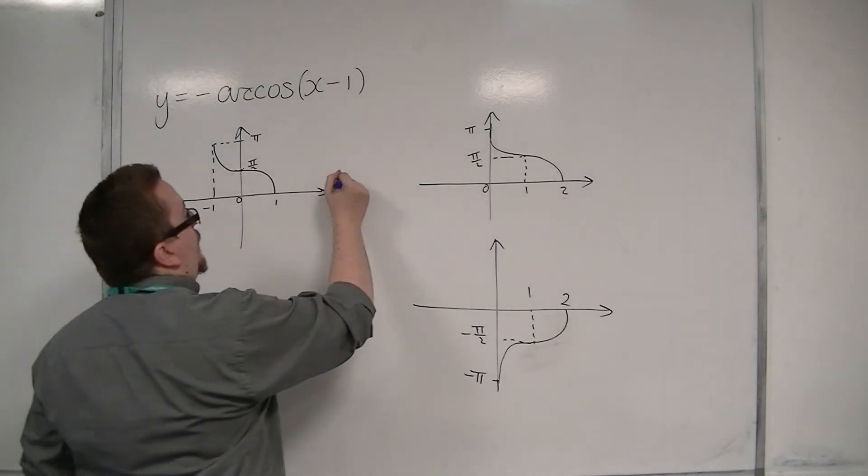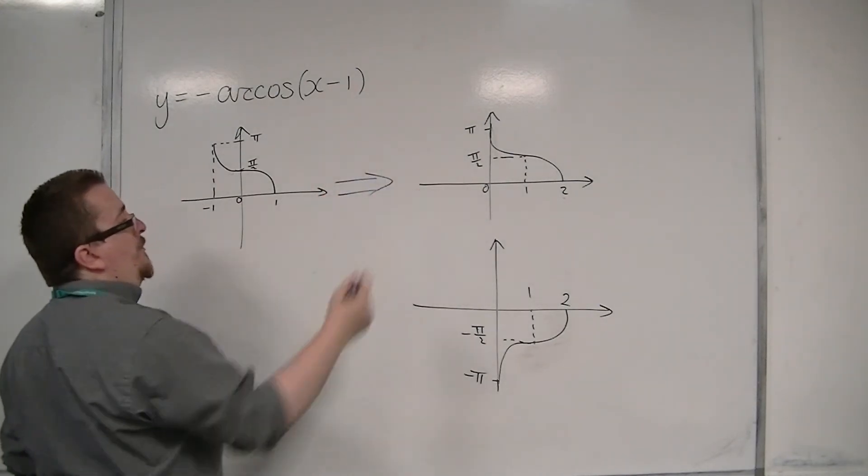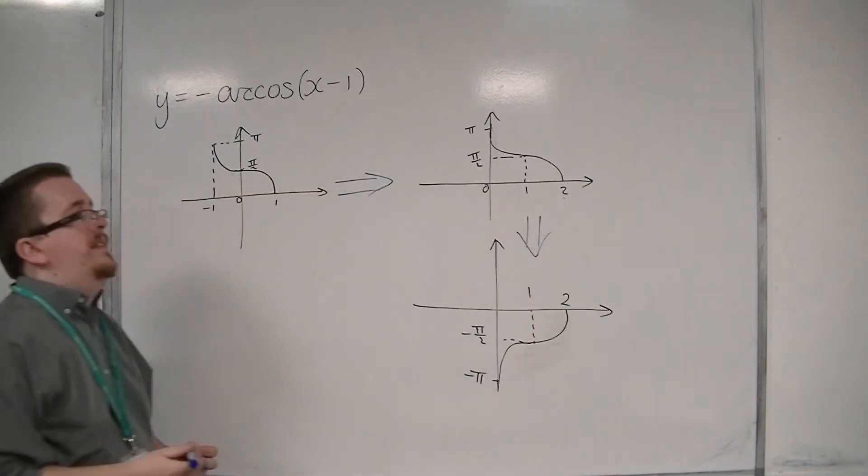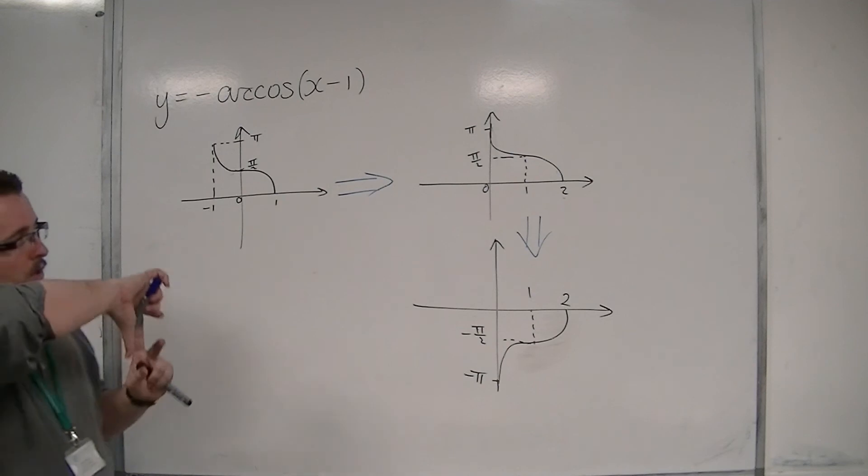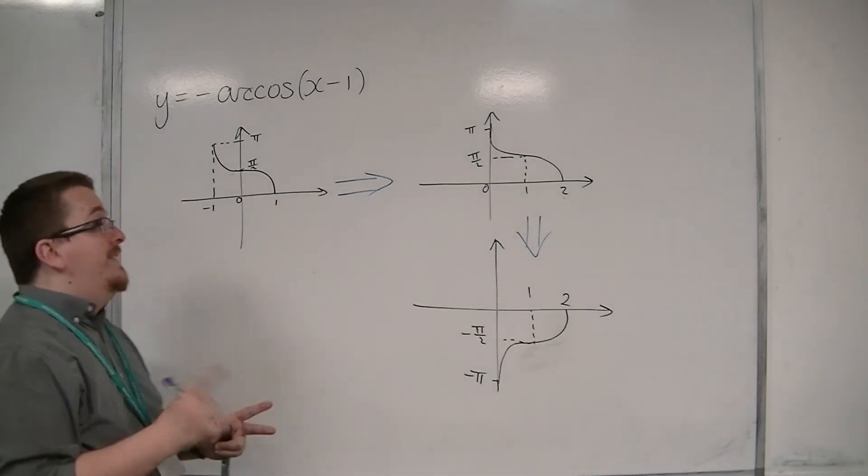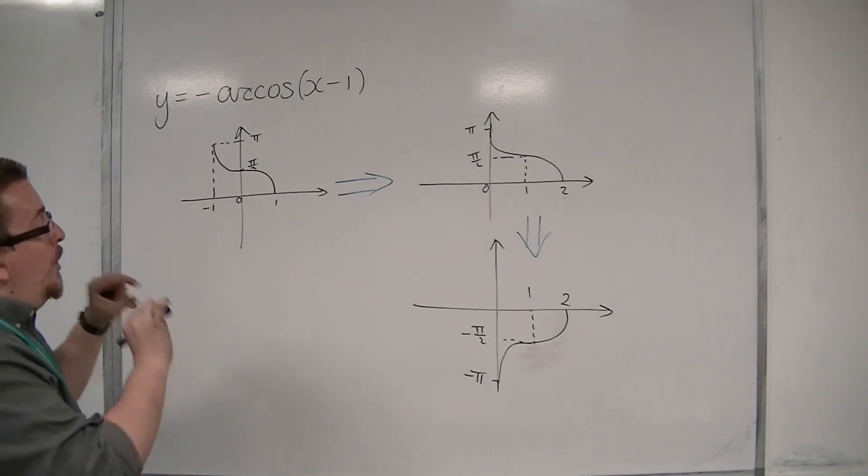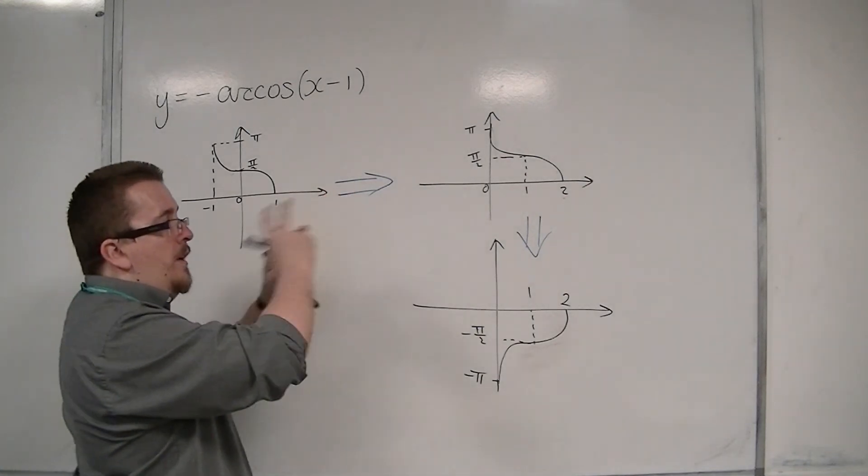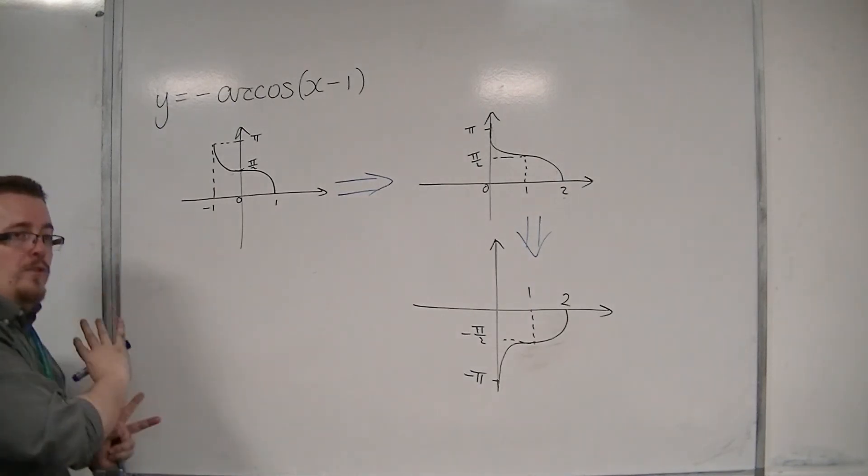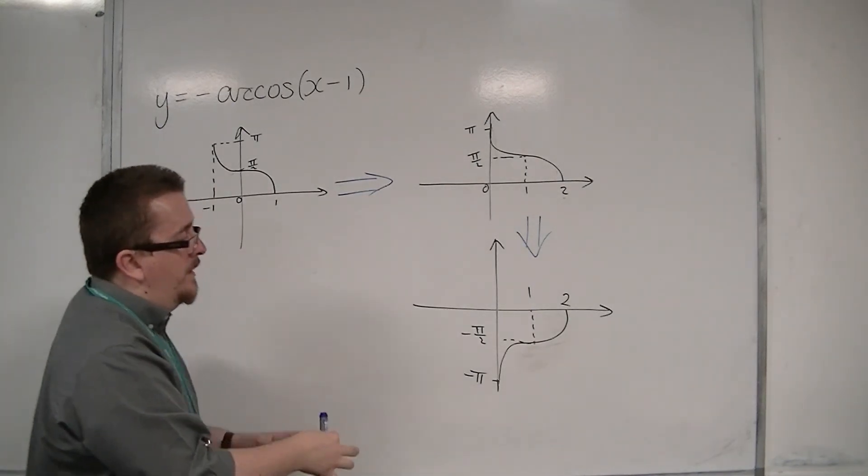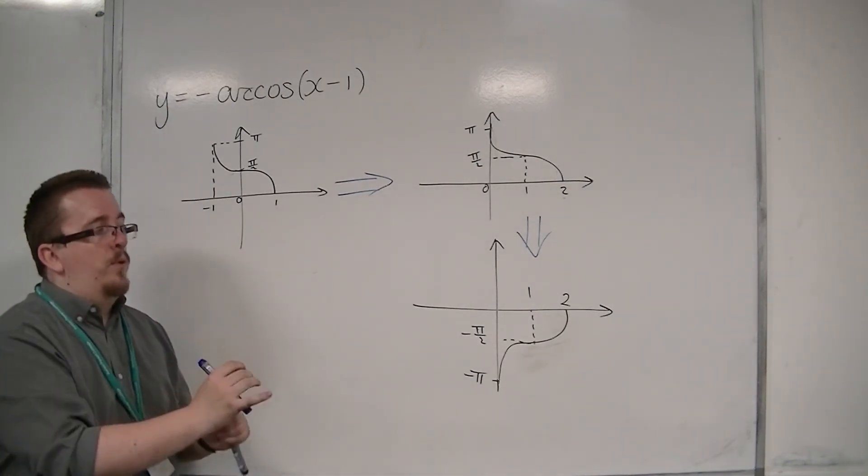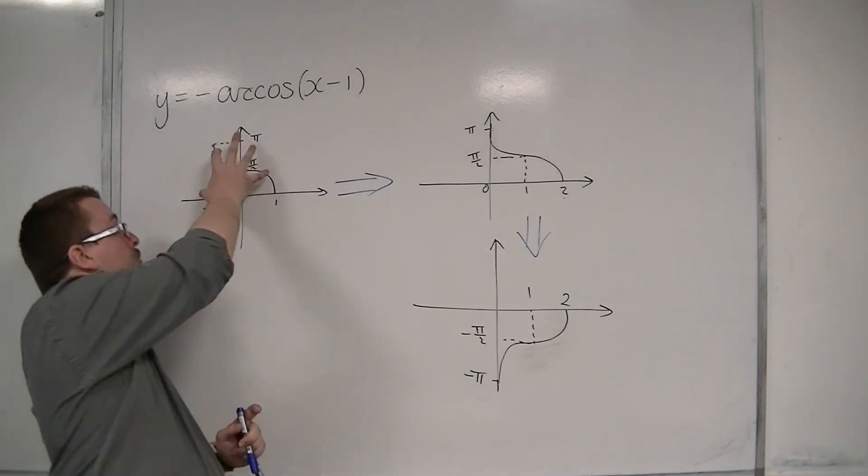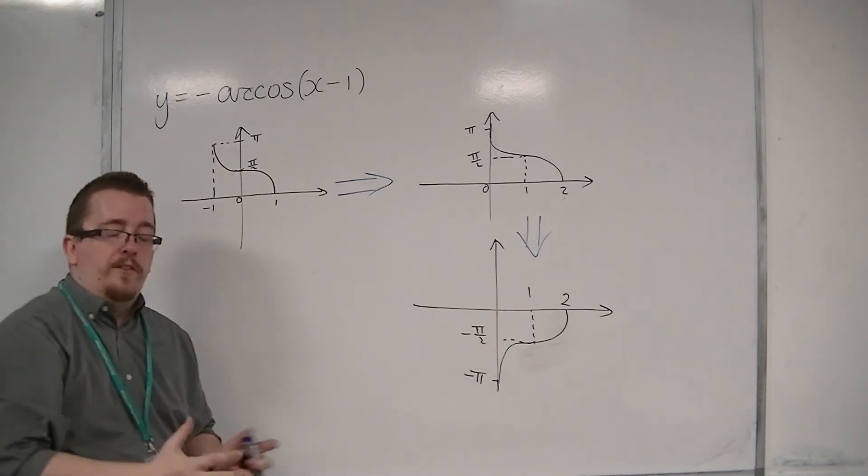So, we did the translation first. That was our first step. And then, we perform the reflection in the x-axis. It's really being able to identify the key points on the trig graph, and then perform the translation and then the reflection, or any kind of transformation on that curve. Then, identifying the key points as you go. You can do it in stages like that if you like, or you can go directly from this one to this one. It's up to you.